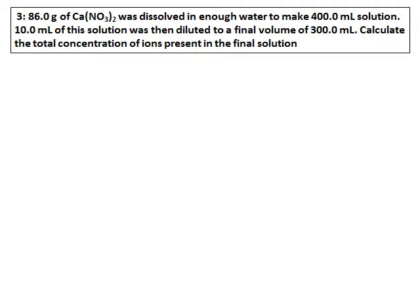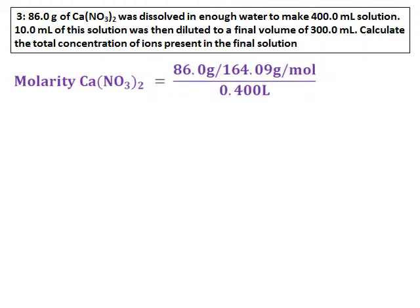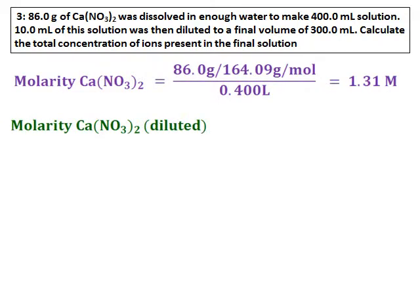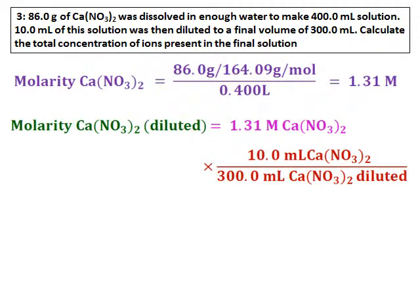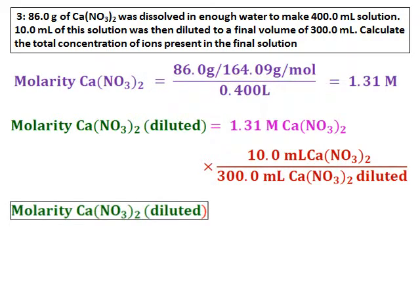86 grams of calcium nitrate was dissolved in enough water to give 400 milliliters of solution. Then we took 10 milliliters of this solution and diluted it to a final volume of 300 milliliters. We are asked to calculate the total concentration of ions in the final solution. First, let's calculate the molarity of the stock solution using the given mass and the molar mass of calcium nitrate. Then we calculate the molarity of the diluted calcium nitrate — taking 10 milliliters and making it into 300 milliliters — and the concentration of the diluted calcium nitrate comes out as 0.044 molar.